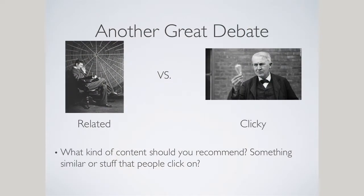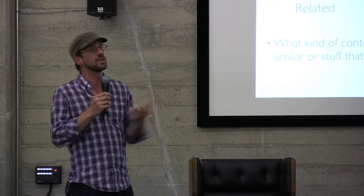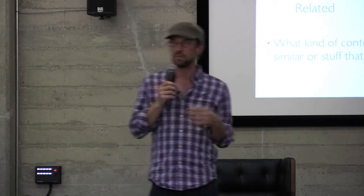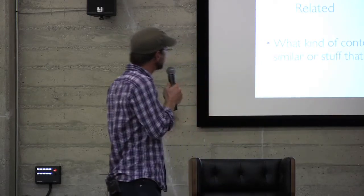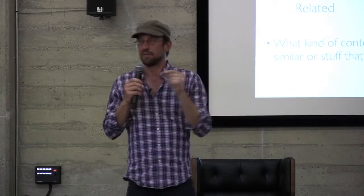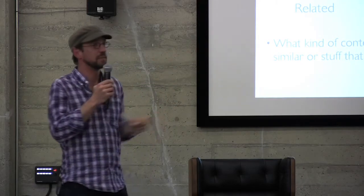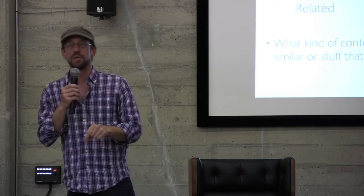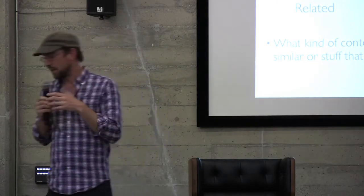There's another great debate — Tesla versus Edison — which is the idea of related versus clicky. At the bottom of your story, do you want to show readers things that are very related to your current topic? That seems sensible. Or do you want to show them things that are clicky — popular on your site? That actually makes sense as well. I used to be firmly in the related camp, with the idea that readers want to dive deep and have that Wikipedia moment. But it turns out there's a really good argument for clicky — people are not always in the mood to dive very deep. They finish a story about Apple suing Google and might want to read about Game of Thrones. People want to be entertained; they don't always want to learn something.